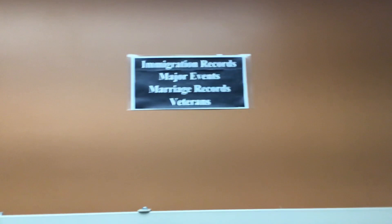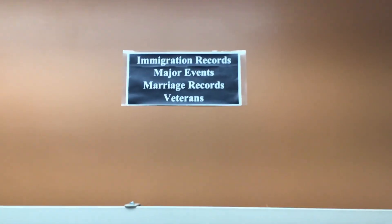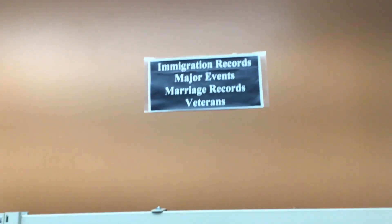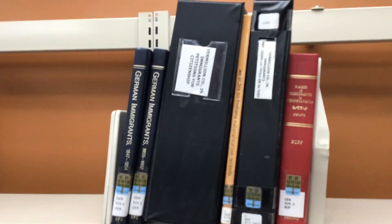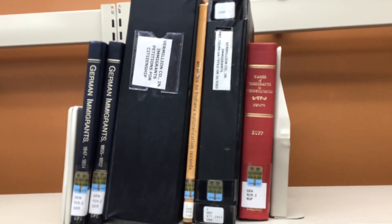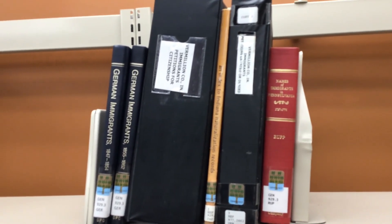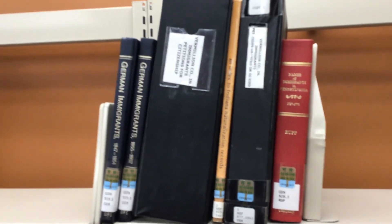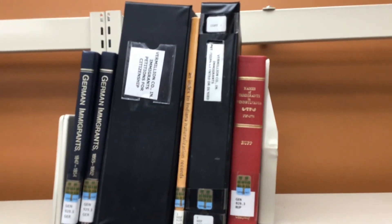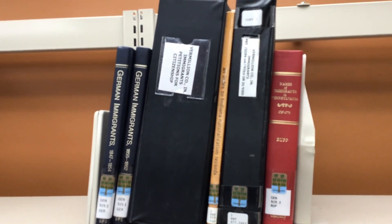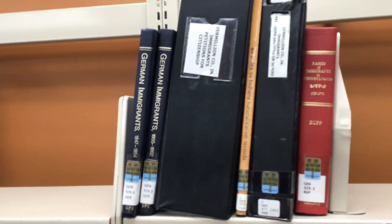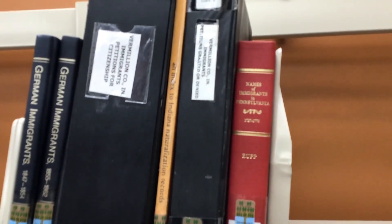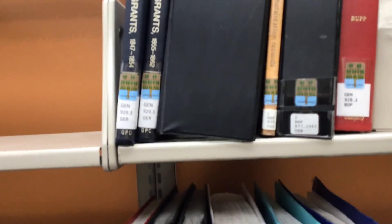Our final stop on the firewall shelves is the immigrant records, major events, marriage records, and veterans. This area did get a lot of immigrants — in Clinton, most were German or Italian, with Northern Italian having some of the most who came through. These records include citizenships, a list of German immigrants, an index of Indiana naturalization records, etc.